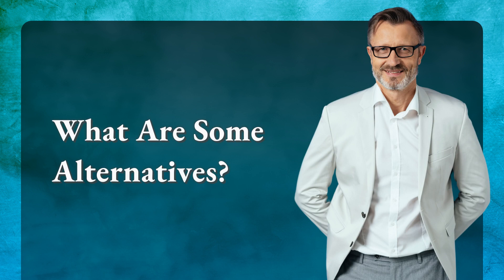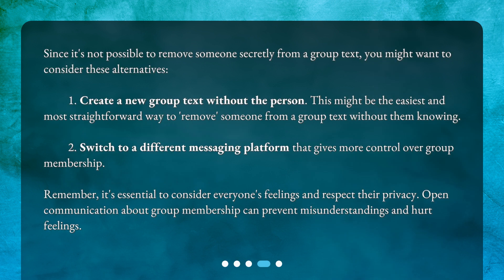What are some alternatives? Since it's not possible to remove someone secretly from a group text, you might want to consider these alternatives. First, create a new group text without the person — this might be the easiest and most straightforward way. Second, switch to a different messaging platform that gives more control over group membership. Remember, it's essential to consider everyone's feelings and respect their privacy. Third, open communication about group membership can prevent misunderstandings and hurt feelings.